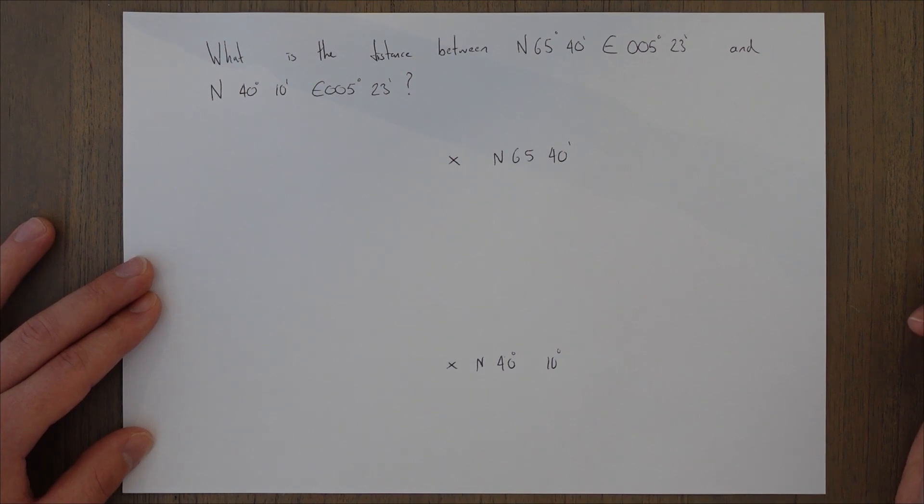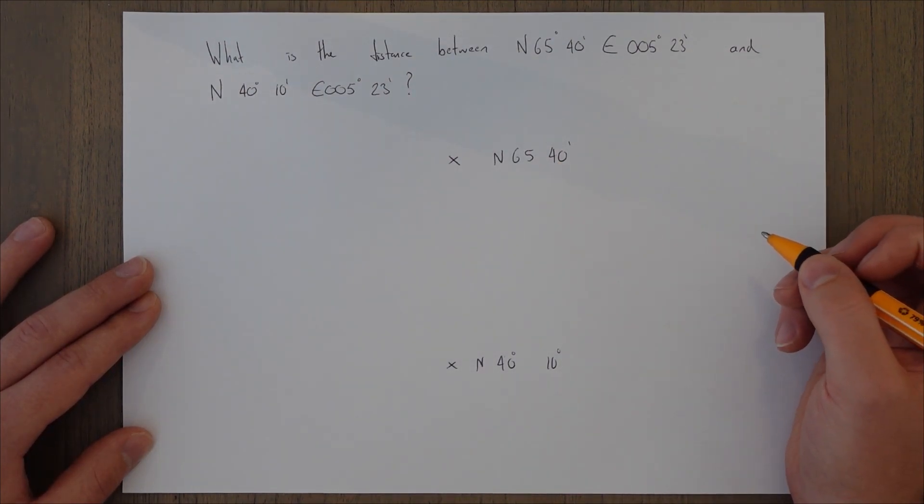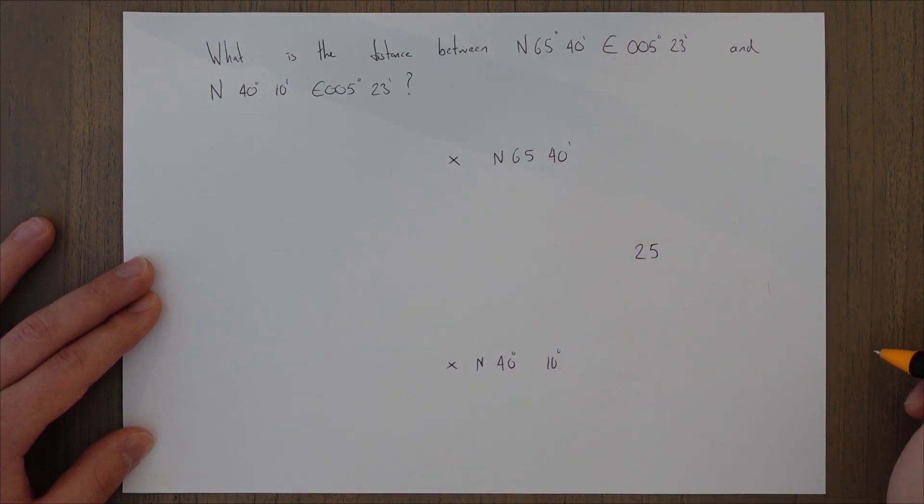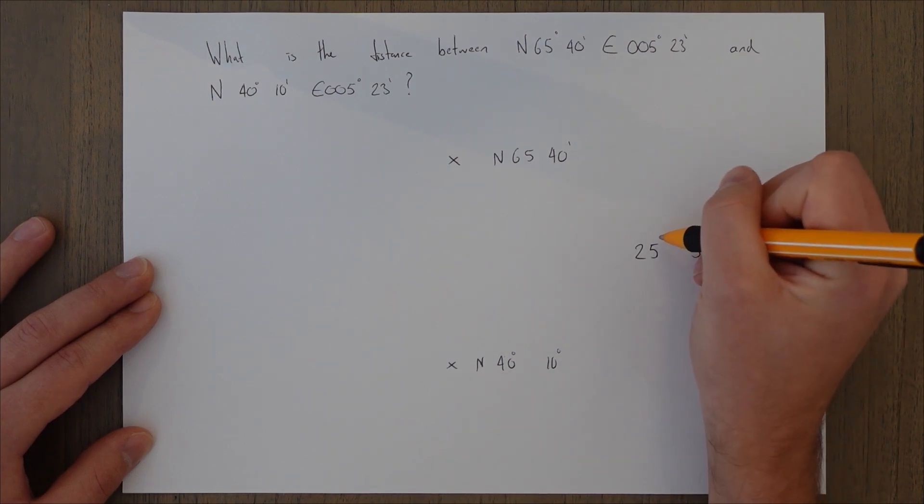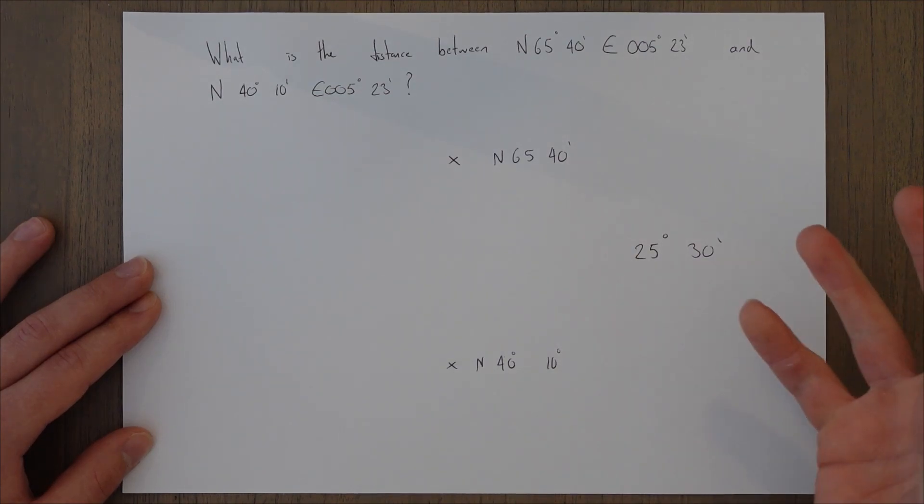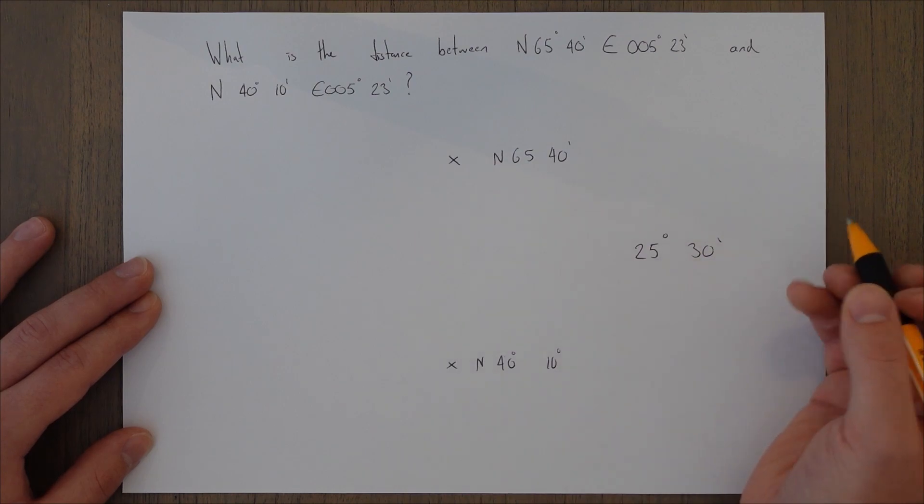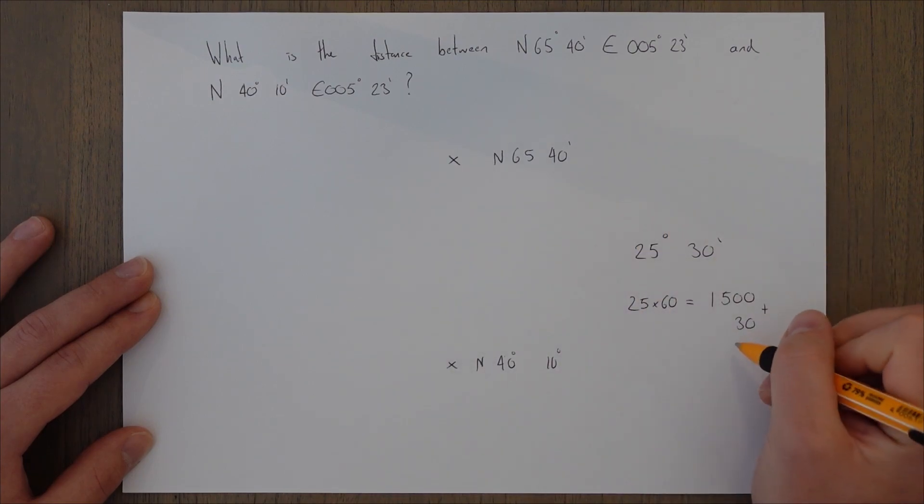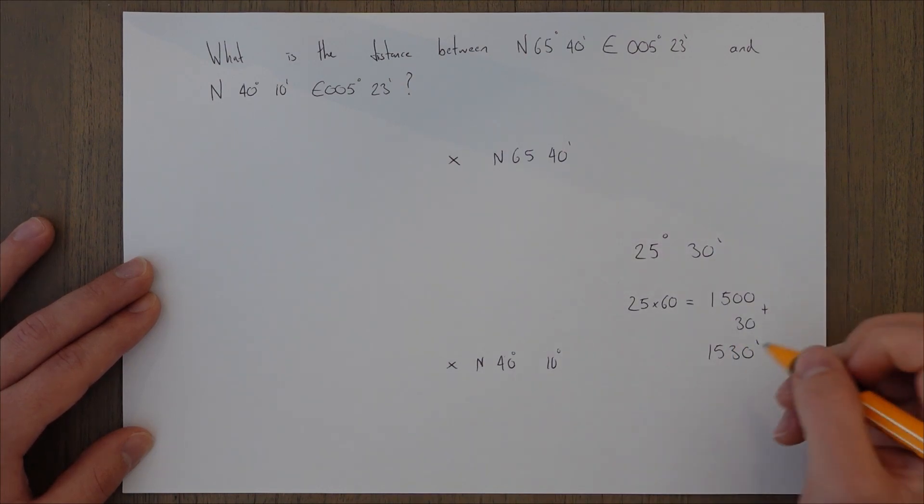So in this case, we can do just some simple calculations. 65 minus 40 is 25. And 40 minus 10 is 30. So that is our change in latitude. It was 25 degrees and 30 minutes. This can then be converted into nautical miles. And we know that one nautical mile is equal to one minute of latitude. So we multiply this by 60, which equals 1500. And then we would add on those 30 spare minutes. 1530 minutes, which is equal to 1530 nautical miles. That would be our answer.